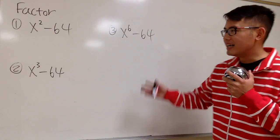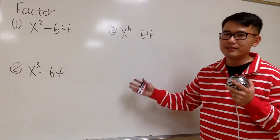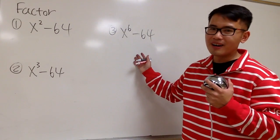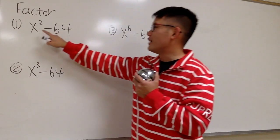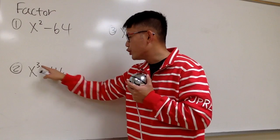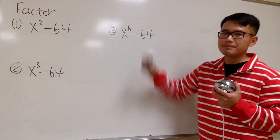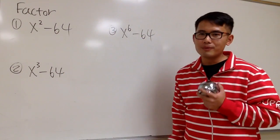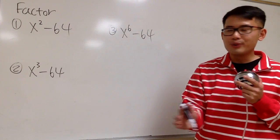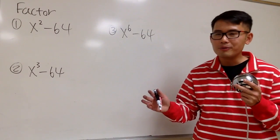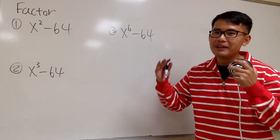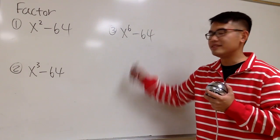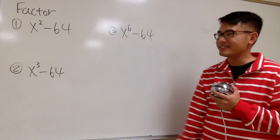In this video, I'm going to show you guys how to factor these three expressions, and you can see how similar they are. Here we have x squared, and this is x cubed, and this is x to the sixth power. And then it's minus 64. These three are also, in my opinion, the three most famous factoring expressions, especially the last one.